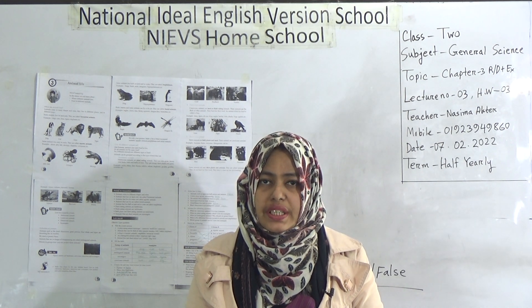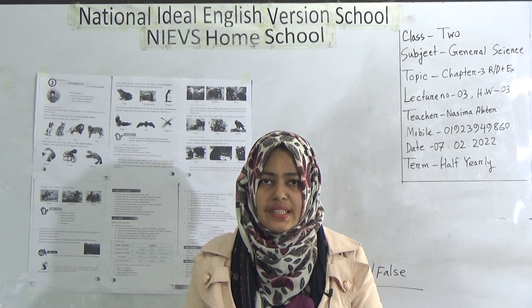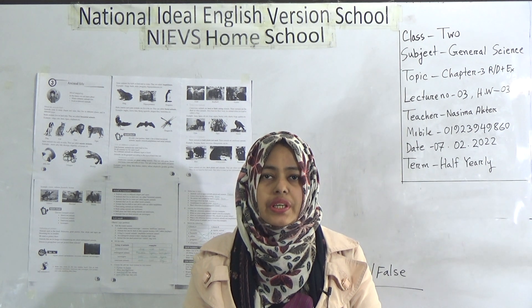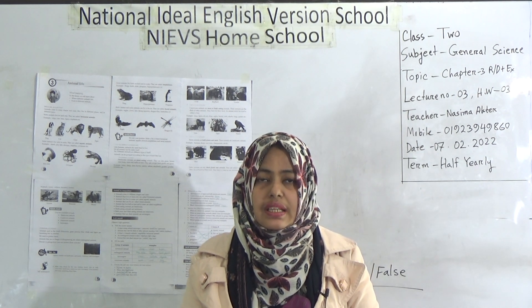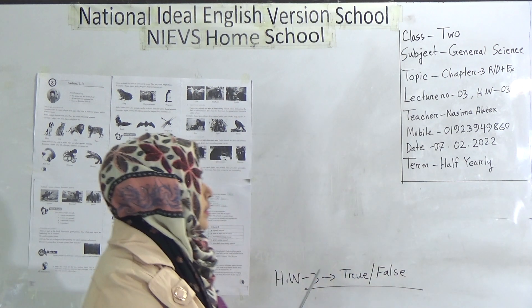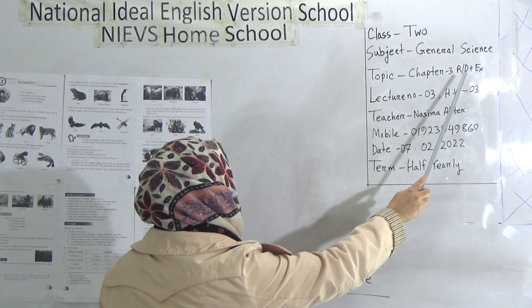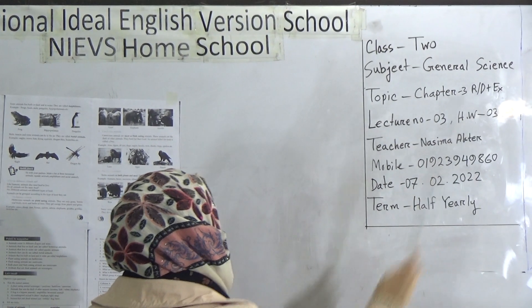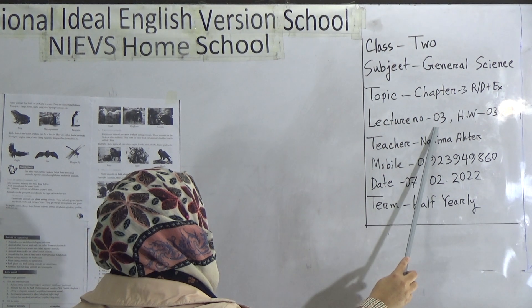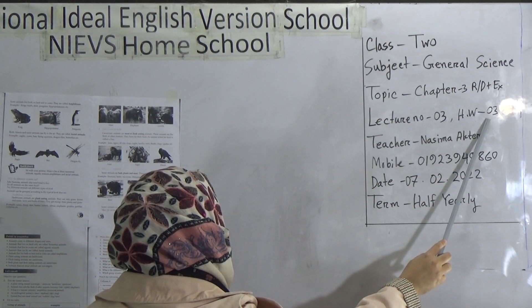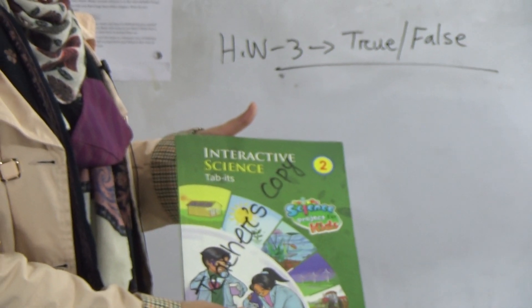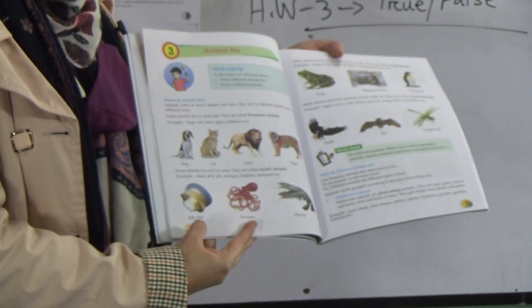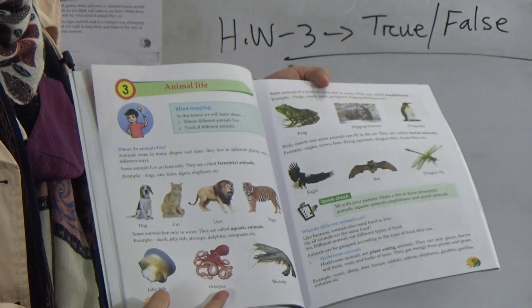Dear students, today I am going to take a general science class for class 2 students. Our today's topic is chapter 3. We will read out this chapter and also solve some exercises. This is page number 24 and the name of this chapter is Animal Life.